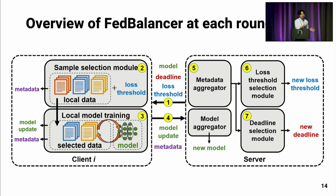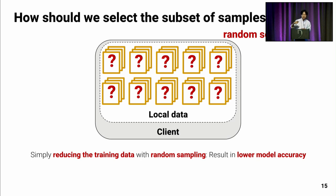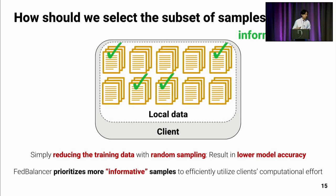When we first designed FedBalancer, the first question was how to select the subset of samples. The simplest idea would be to reduce training data with random sampling, but this simple reduction could result in lower model accuracy because it just reduces data contribution. So we designed FedBalancer to prioritize more informative samples to efficiently utilize the client's computational effort.